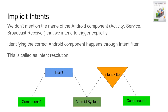As the name itself indicates, in the implicit intents, we don't mention the name of the Android component that we want to trigger. So how does the identification of the component that needs to be triggered happen? It is resolved through a concept of intent filter.